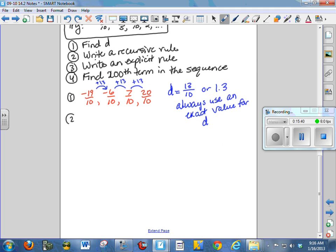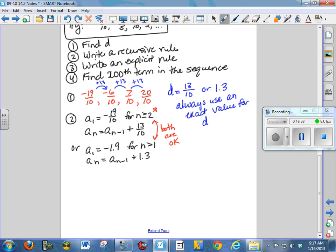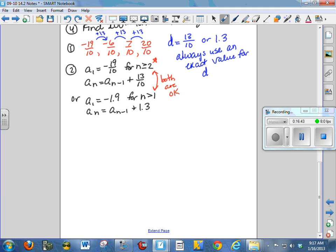So that's d. So there's number 1. Number 2, write a recursive rule. Well, we have to start out with a sub 1 is equal to negative 19 tenths and then for n greater than or equal to 2, or you could say for n greater than 1, either one, a sub n is equal to a sub n minus 1 plus 13 tenths. Now, if you had chosen to do this in decimal form, you could have said a sub 1 equals negative 1.9 for n greater than 1. I'll use that as an alternative. It means the same thing. a sub n is equal to a sub n minus 1 plus 1.3. So both of these are okay. I think I probably have a slight preference for n greater than or equal to 2 because it just reminds me that I can't use numbers in between 1 and 2.